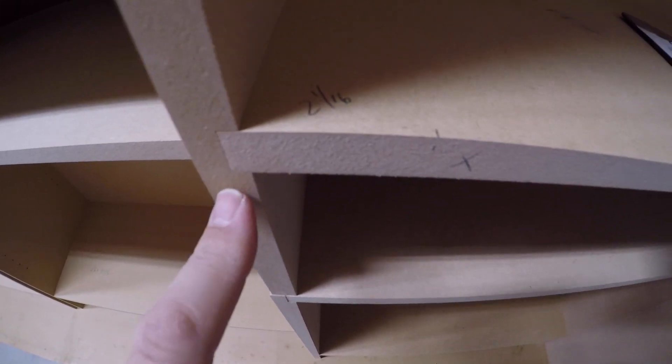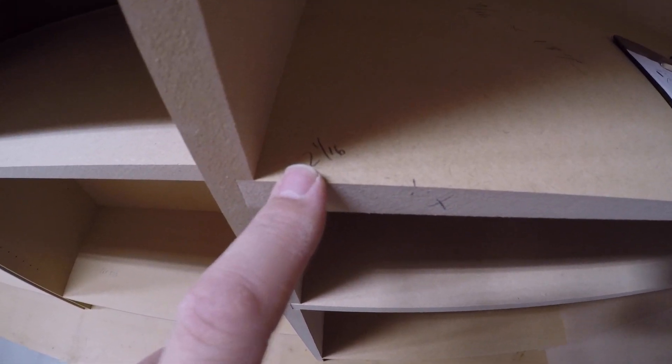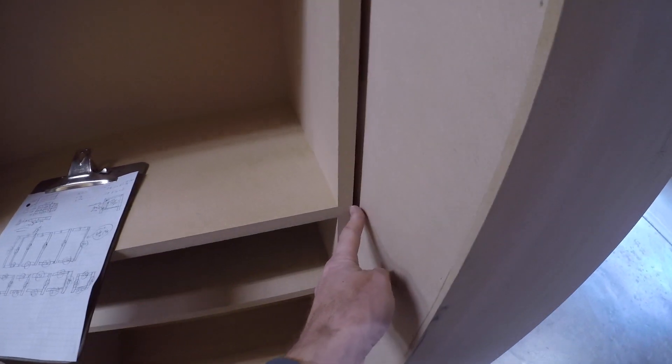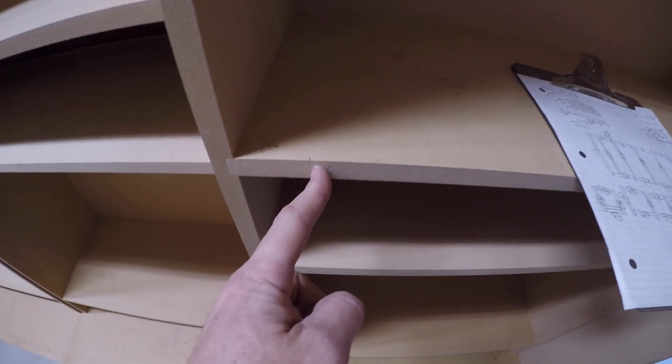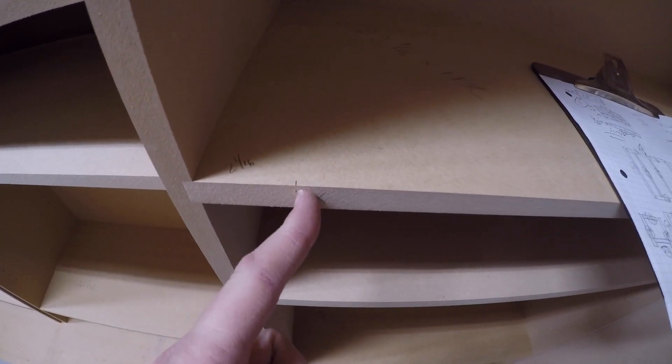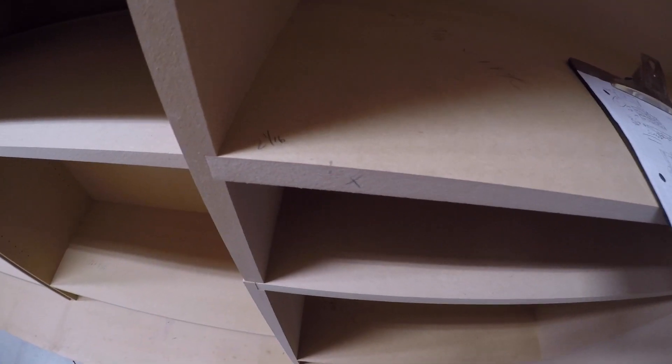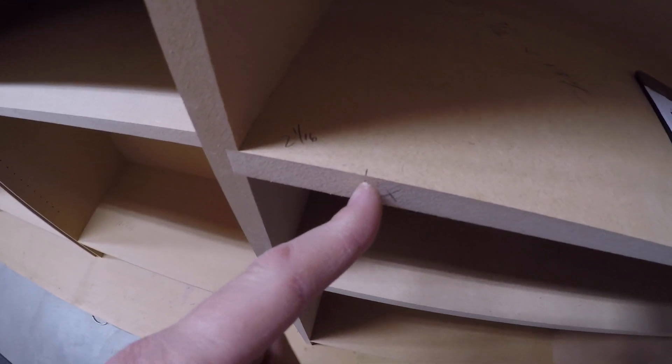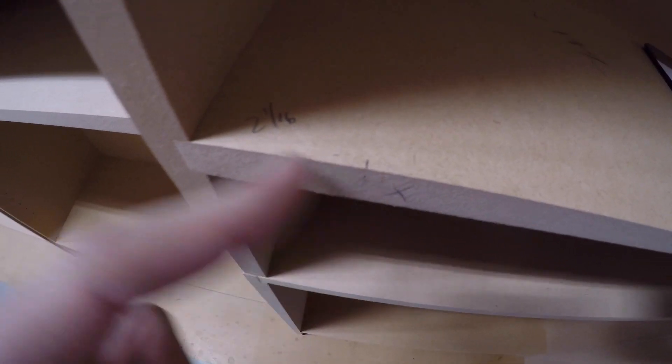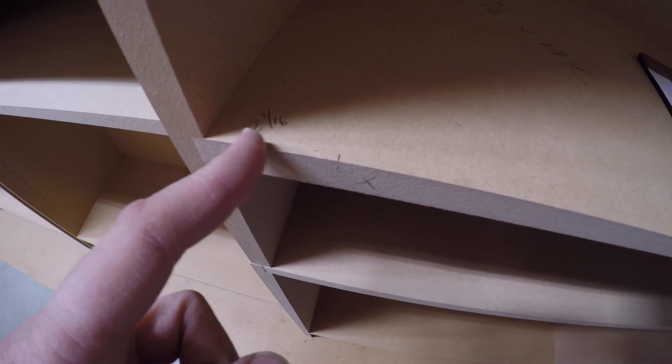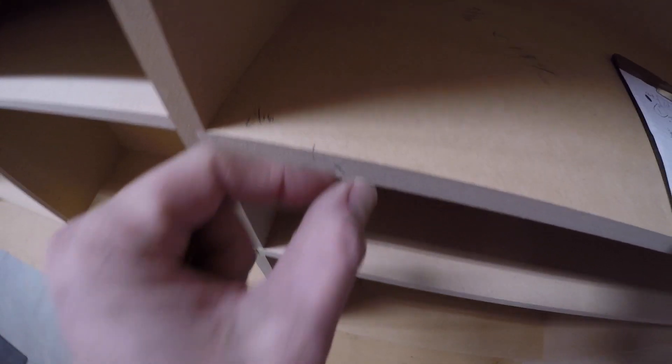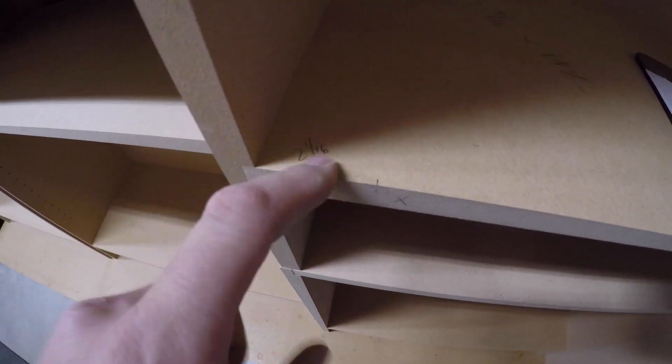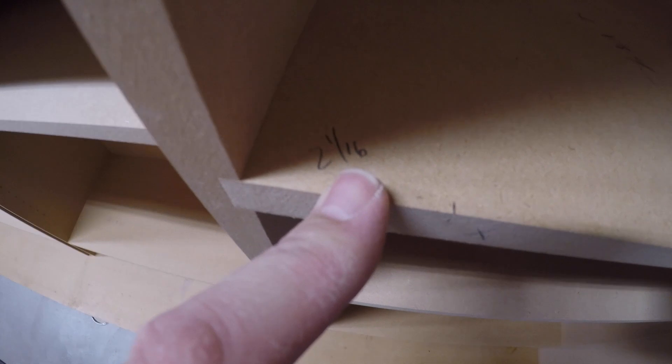So then, what I did was I actually have a spacer here, and I've measured from the outside to the outside of the new part, which is where it should be. That dimension is 28 and a half. In order to get a spacer to put my divider, or my new end panel, exactly where I want it to be, I measured that, and it's 2 and 1/16th.